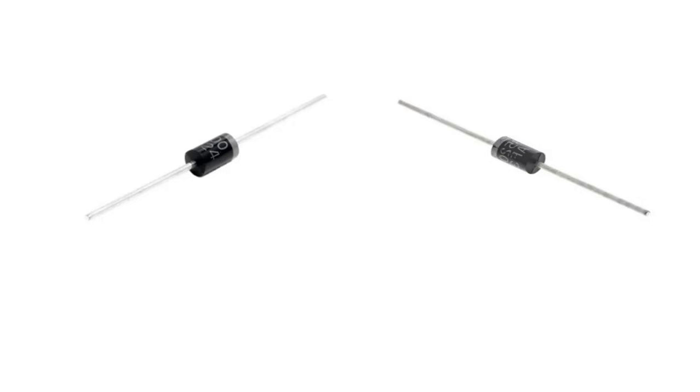First of all, let's start with how the symbol of the Schottky diode is. Its symbol is as you see it here. Here's how you can remember the symbol. Instead of a line at the cathode pin of the diode symbol, there is an S-like but angular shape.